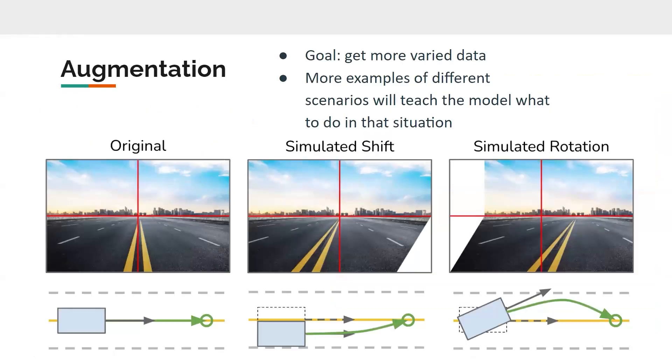So another trick that we can use, since we need a lot of data, as Sid explained earlier, is called augmentation. So what augmentation is, is you use existing data and you manipulate it in a way that you can predict. So that way you can simulate being in another position.